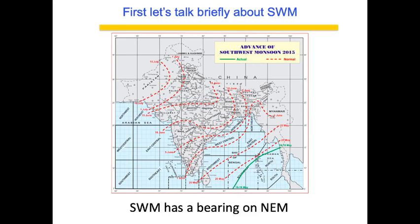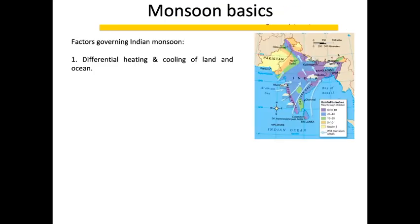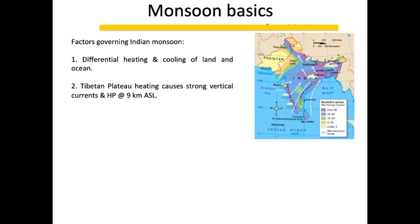Before getting into depth, some basics of Southwest monsoon: the factors that govern it are the differential heating and cooling of land. The Tibetan plateau heats up, leading to a low pressure system over land, pulling winds from the Arabian Sea and Bay of Bengal towards the land. At the same time, the ITCZ starts moving northward, which is very crucial.